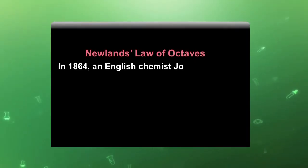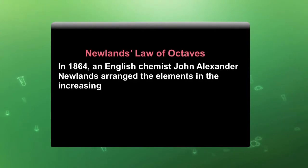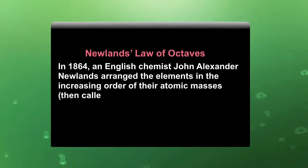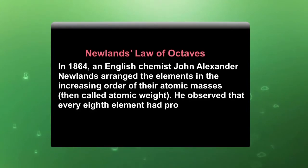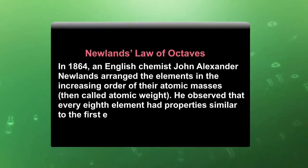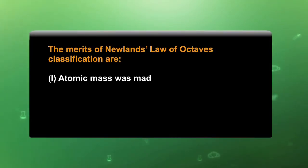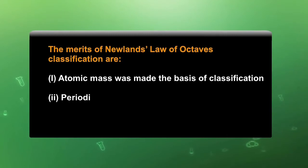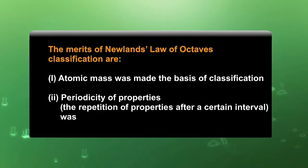Newlands' Law of Octaves: This was the second attempt to classify elements. In 1864, an English chemist John Alexander Newlands arranged the elements in increasing order of their atomic masses, then called atomic weight. He observed that every eighth element had properties similar to the first element, as in the musical tones of octaves. The merits of Newlands' Law of Octaves are: atomic mass was made the basis of classification, and periodicity of properties — the repetition of properties after a certain interval — was recognized for the first time.